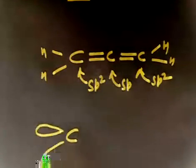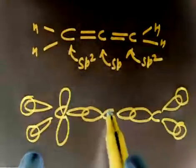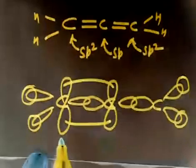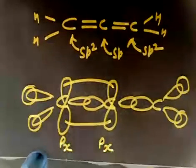This carbon has three sp2 orbitals — one, two, three. This central carbon has two sp orbitals — one, two. And this end carbon is sp2 — one, two, three. Now this will have hydrogen, hydrogen, hydrogen, hydrogen, and here you have hydrogen. You will have one lobe perpendicular to this carbon and one lobe perpendicular to this carbon, giving a bond between these lobes. That is called the px-px overlap.